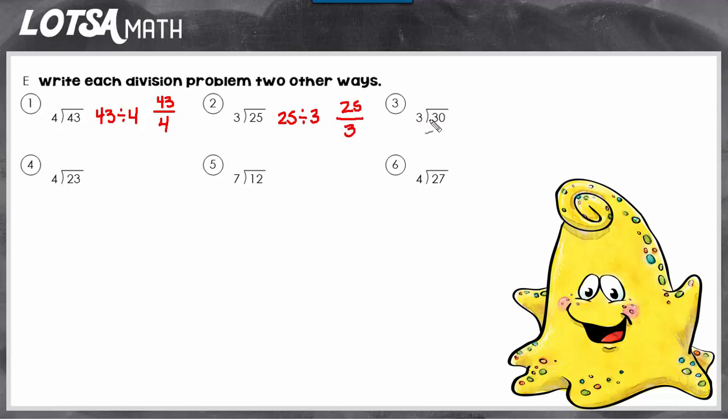So do number three. We could do 30 divided by 3 like that, or like this, or like this. Each of these, even though they look different, they represent the exact same quotient.